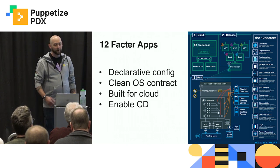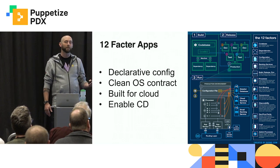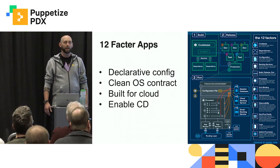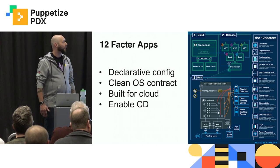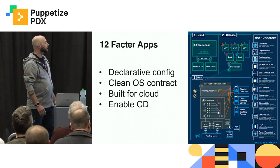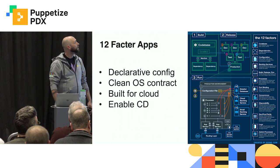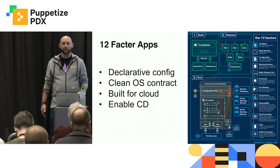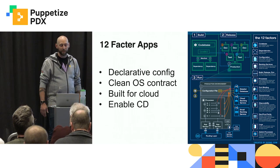For example, having declarative configuration — we've heard that one before. Have a clean contract with the operating system. It was built to work on cloud platforms: you could repeatedly deploy and operate it primarily over network APIs. And it enables continuous delivery, shown in the build, release, run section. It predates all of the State of DevOps reports findings about how continuous delivery practices enable better business outcomes. It wasn't infallible though.